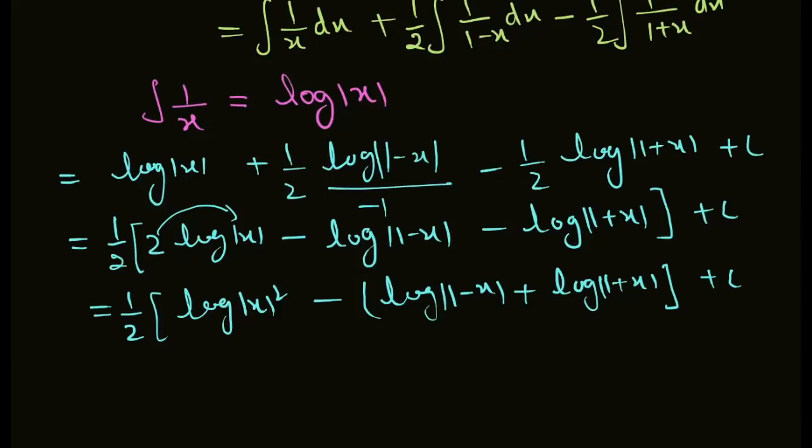According to log property, log a plus log b equals log ab. When we add logs, the number in front becomes a power.